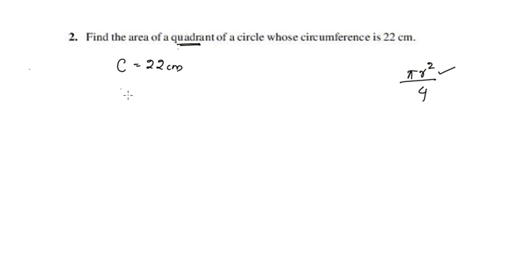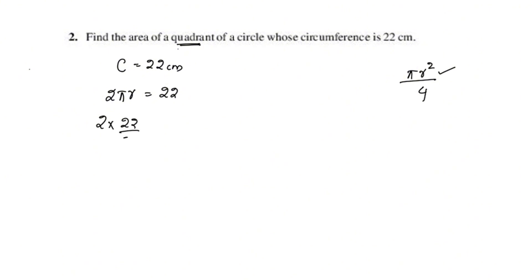What is the circumference? Circumference is 2πr. So 2πr equals 22. We have 2 into 22 by 7 into r equals 22.